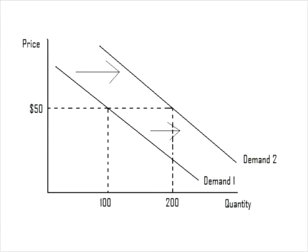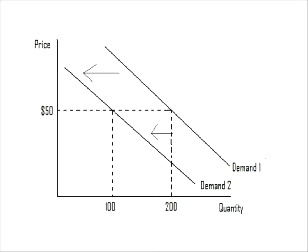This picture shows an increase in demand. For the good being sold, the price stays constant at $50, but for whatever reason, more units are being sold — at every given price, more units are sold than before. Likewise, this graph shows a decrease in demand. The price again stays constant at $50, but for some reason, fewer units are being sold. So we have to investigate what is causing these changes.